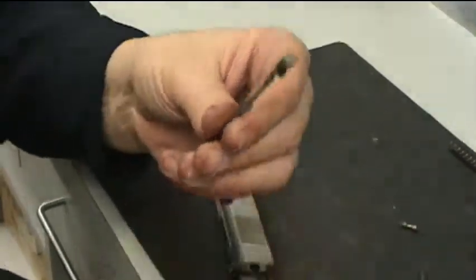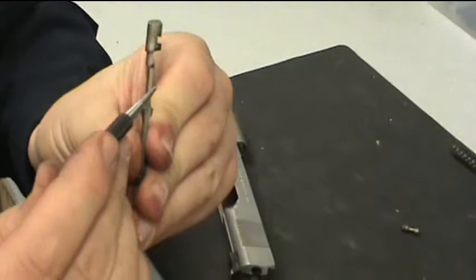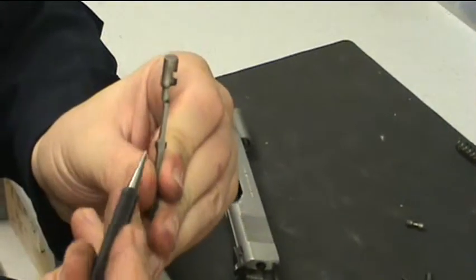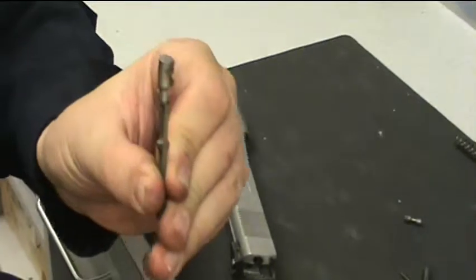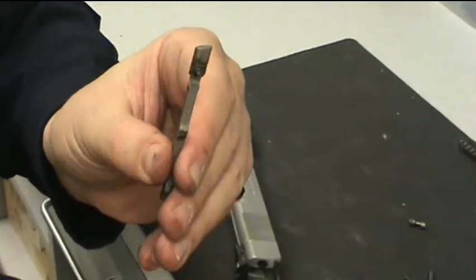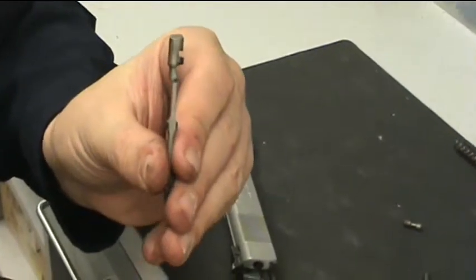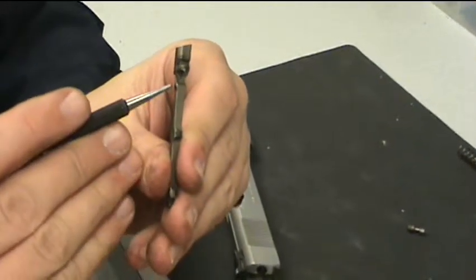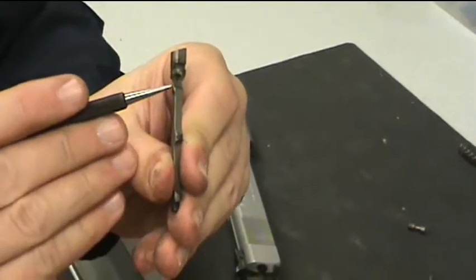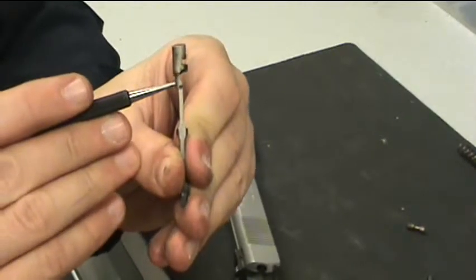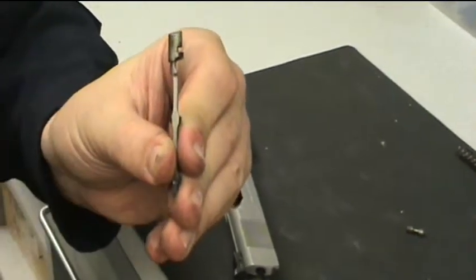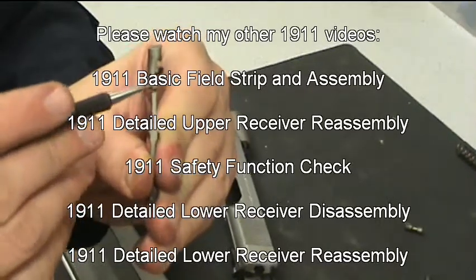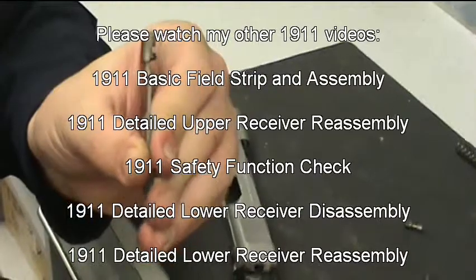Now, you'll see this one is for the Series 80, so it's got this cutout in it right here. If you don't have a Series 80, the Series 80 extractor will fit in your 1911. But if you have a non-Series 80 extractor, that cutout will not be there. You cannot use a standard extractor in a Series 80 firearm because that cutout is where the firing pin safety goes.